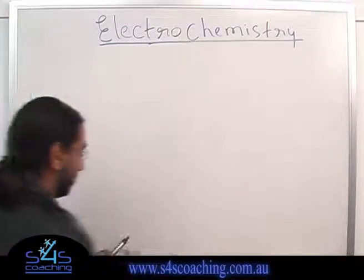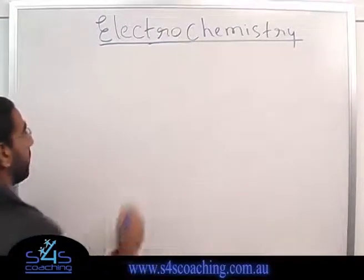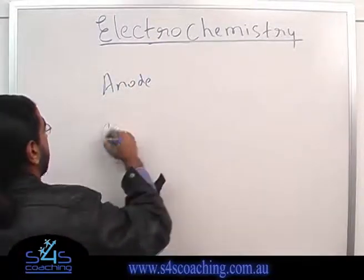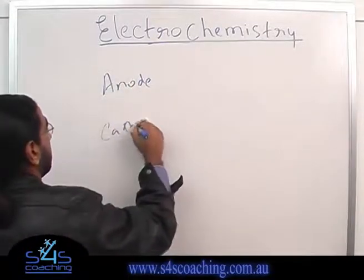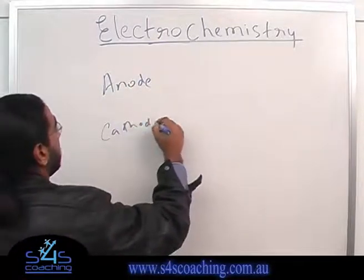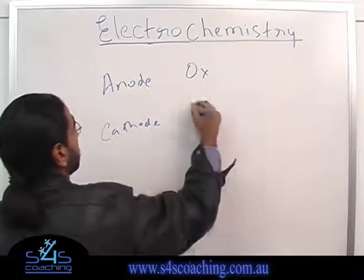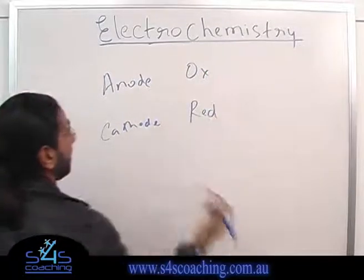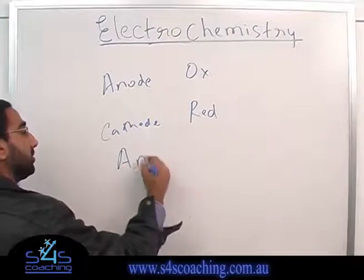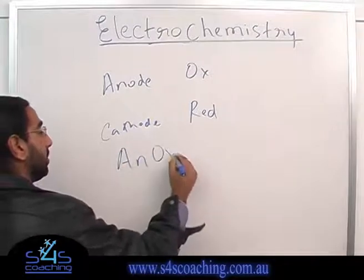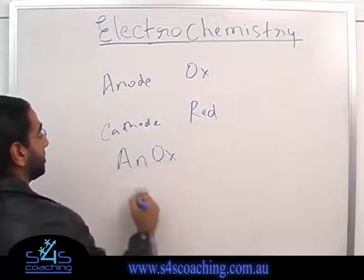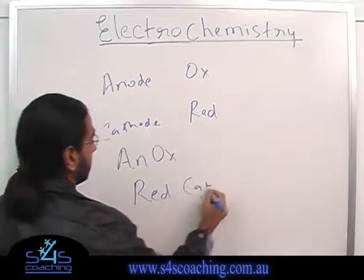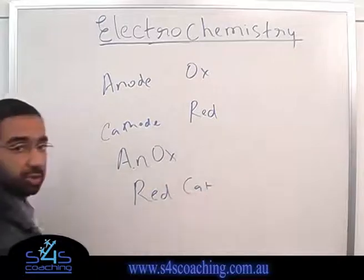The other thing I forgot to tell you: anode and cathode. Anode is where oxidation happens, cathode is where reduction happens. A way to remember it is 'AnOx' — anode is oxidation — and 'RedCat' — cathode is reduction.